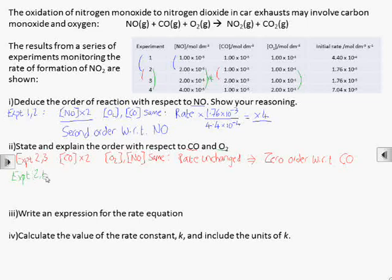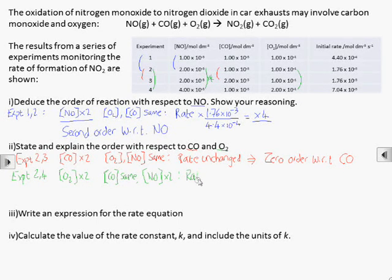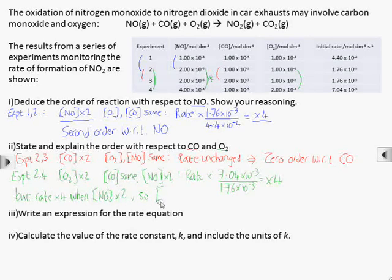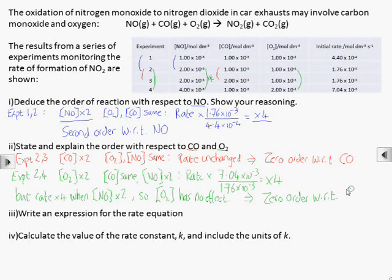Comparing experiments 2 and 4, we double the concentration of both NO and O2. Doubling the concentration of NO, we know will increase the rate times 4. And here the rate has increased times 4, so we can see that the increase in the concentration of O2 has had no effect on the rate. So the reaction is also zero order with respect to O2.